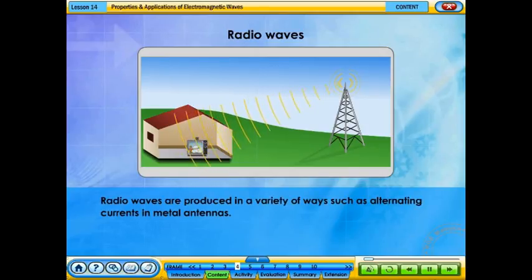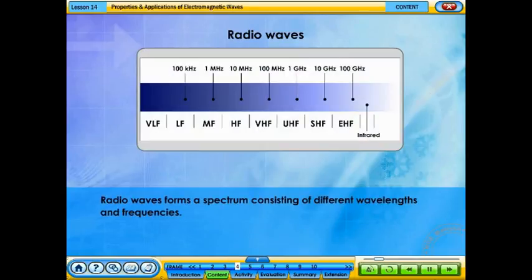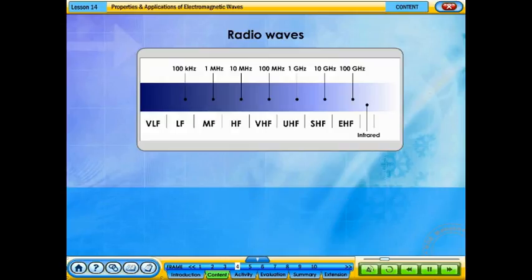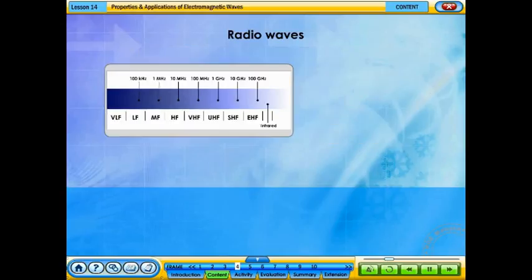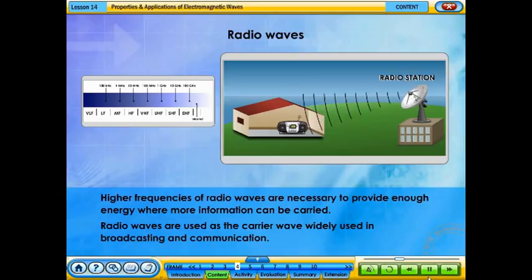Radio waves are produced in a variety of ways, such as alternating currents in metal antennas. Radio waves form a spectrum consisting of different wavelengths and frequencies. Higher frequencies of radio waves are necessary to provide enough energy where more information can be carried. Radio waves are used as the carrier wave, widely used in broadcasting and communication.